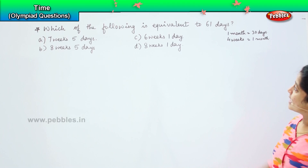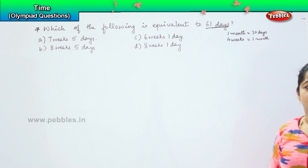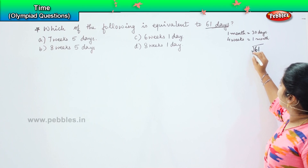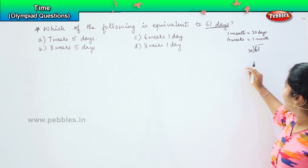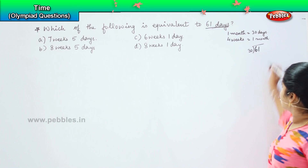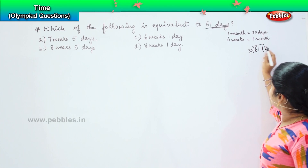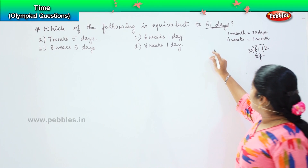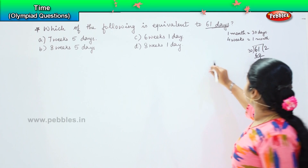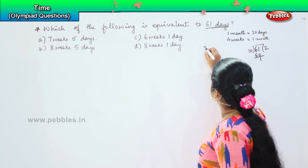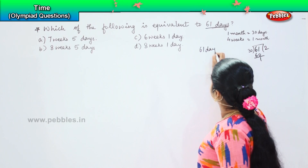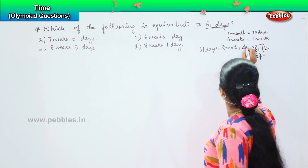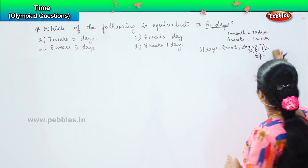So now we need to calculate 61 days. We do 61 divided by 30, because we are assuming one month has 30 days. Six divided by three is two, so that gives us two months and one day remaining. We know that one month has four weeks.